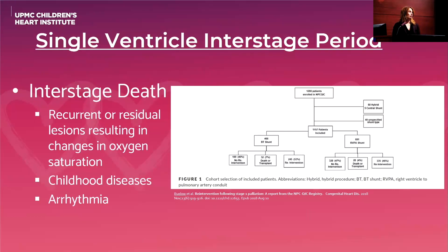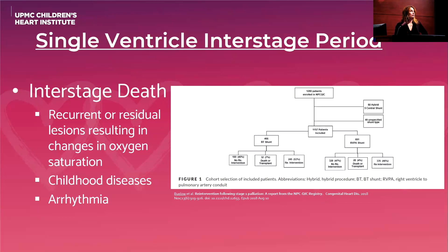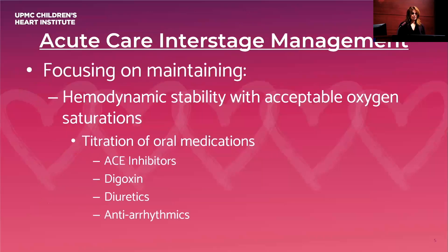Interstage death can be due to multiple reasons: recurrent or residual lesions resulting in changes in oxygen saturation, typical childhood illnesses like viruses and URIs, or arrhythmias. Studies have demonstrated that in both BT shunt and RV-to-PA conduit groups, there is at least around 50 percent re-intervention during the interstage period, so it must be closely monitored to prevent major adverse events.